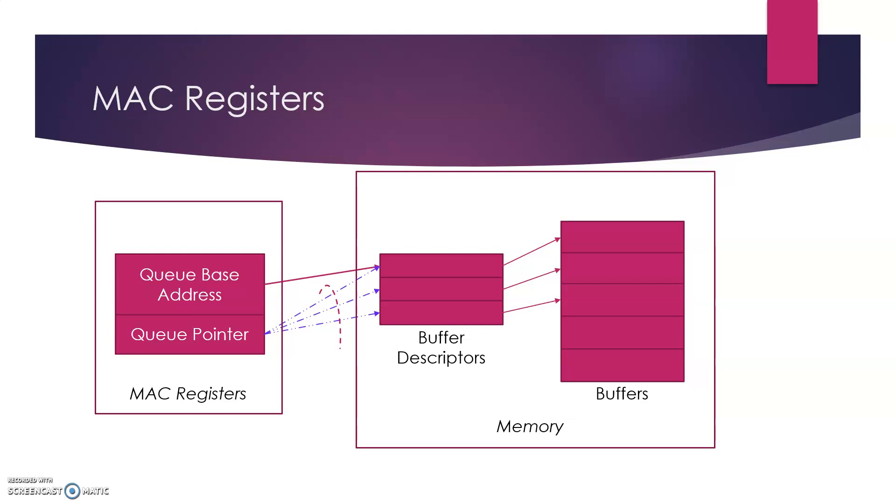When the queue pointer encounters the last buffer descriptor in the list, it wraps back to the first buffer descriptor in the list, that is the queue base address.